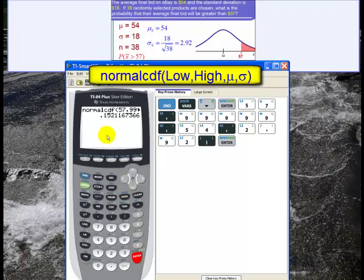And the calculator gives me that this probability is about .1521 rounded to 4 decimal places.